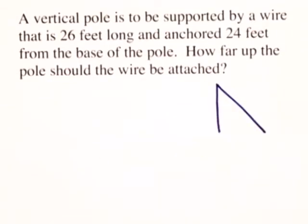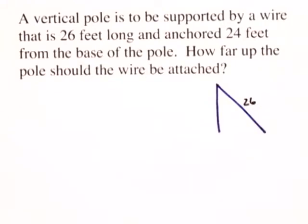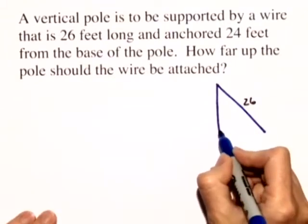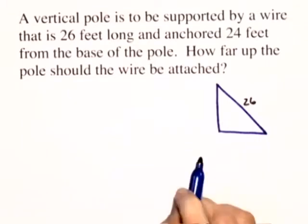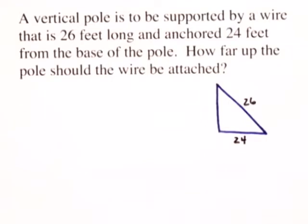It's 26 feet long and that wire is anchored 24 feet from the base of the pole. So it's 24 feet in the horizontal distance.